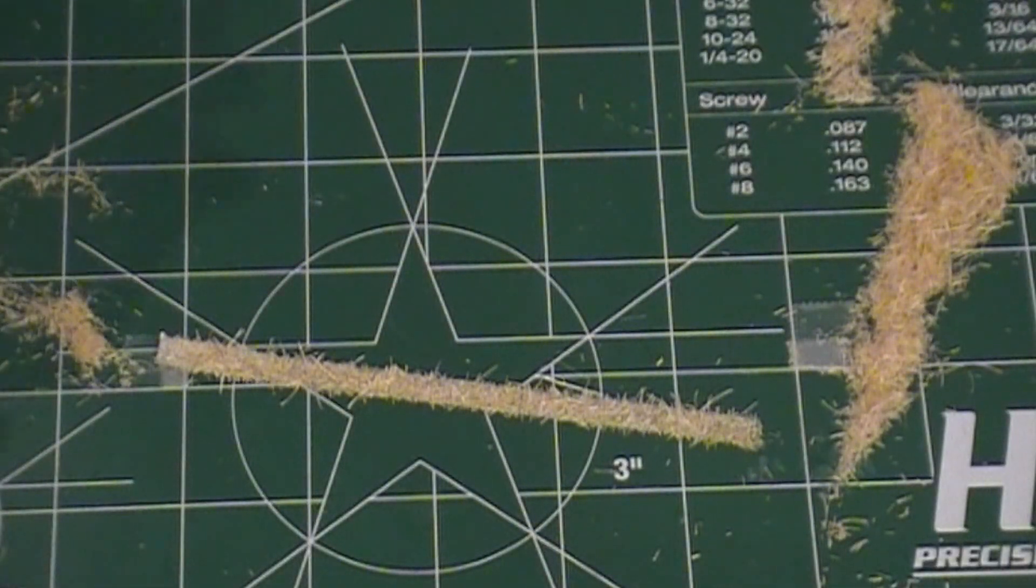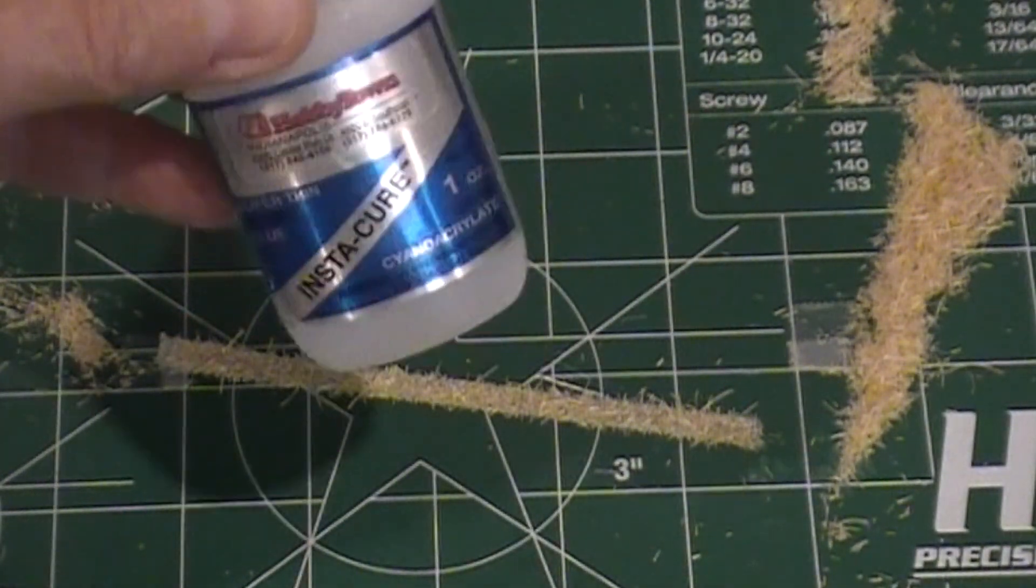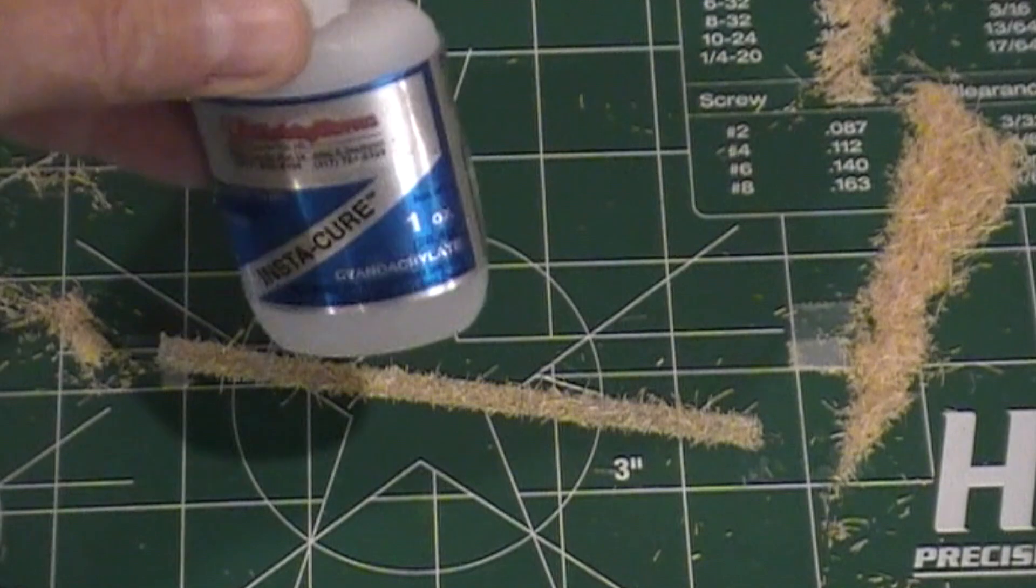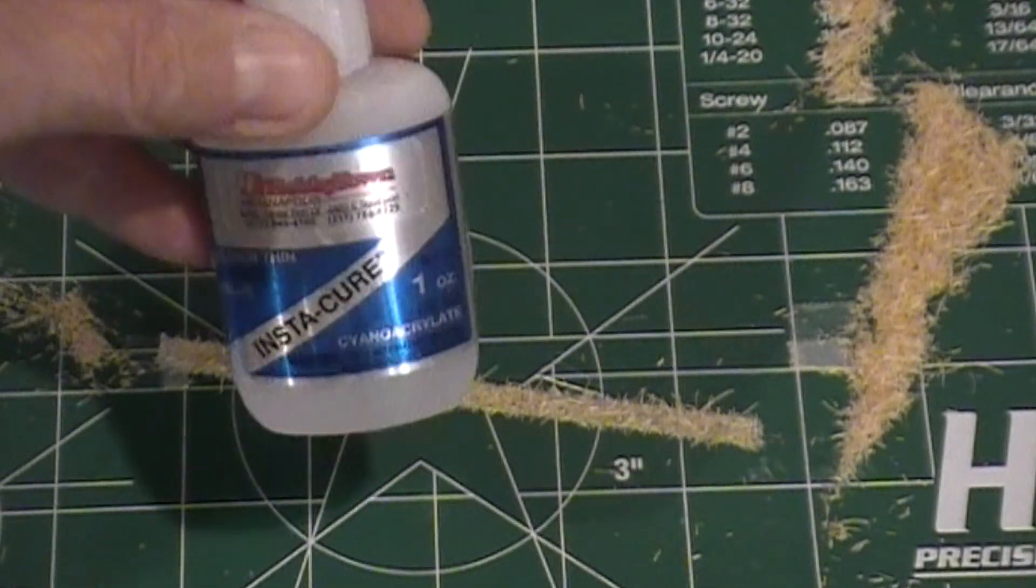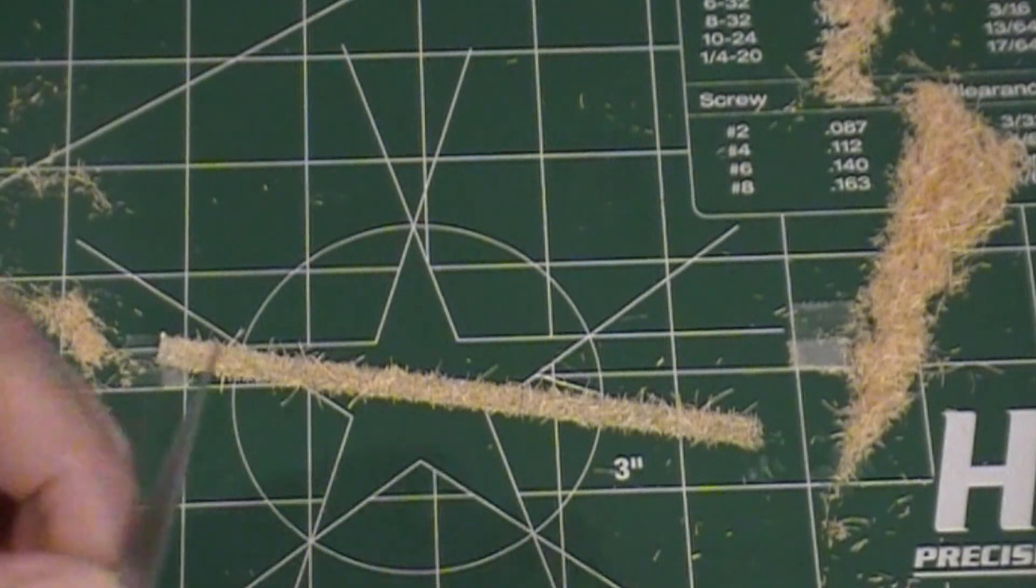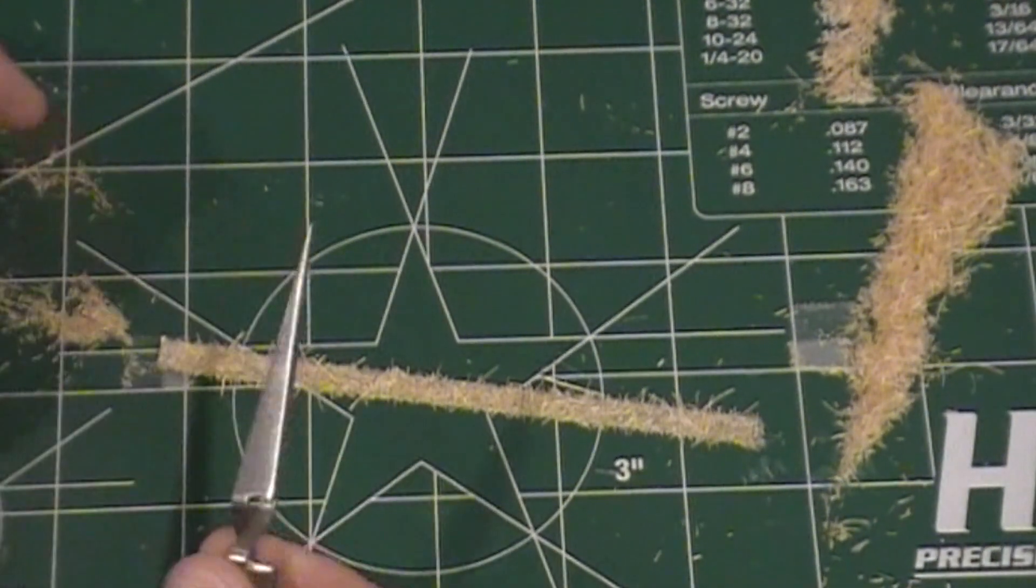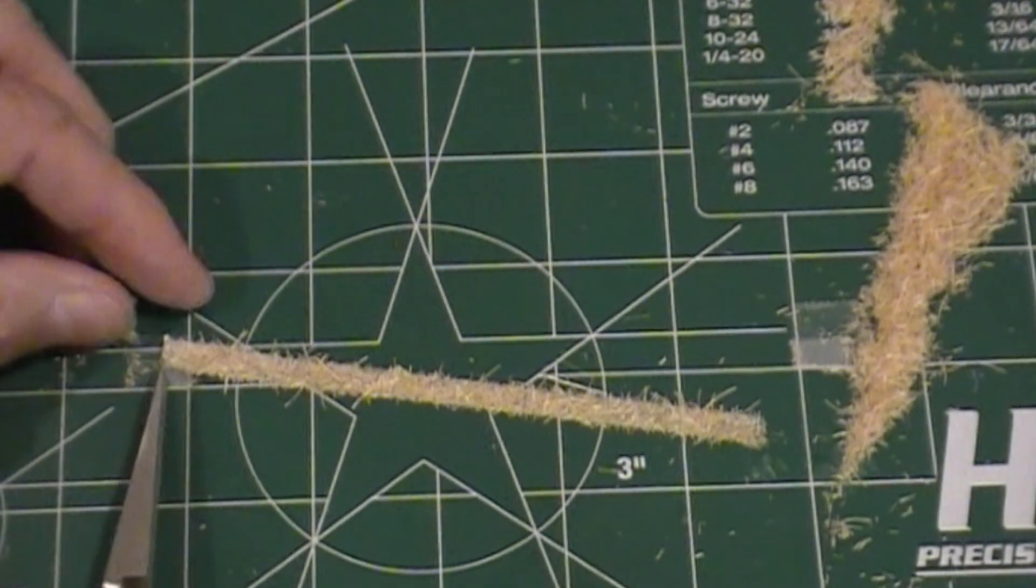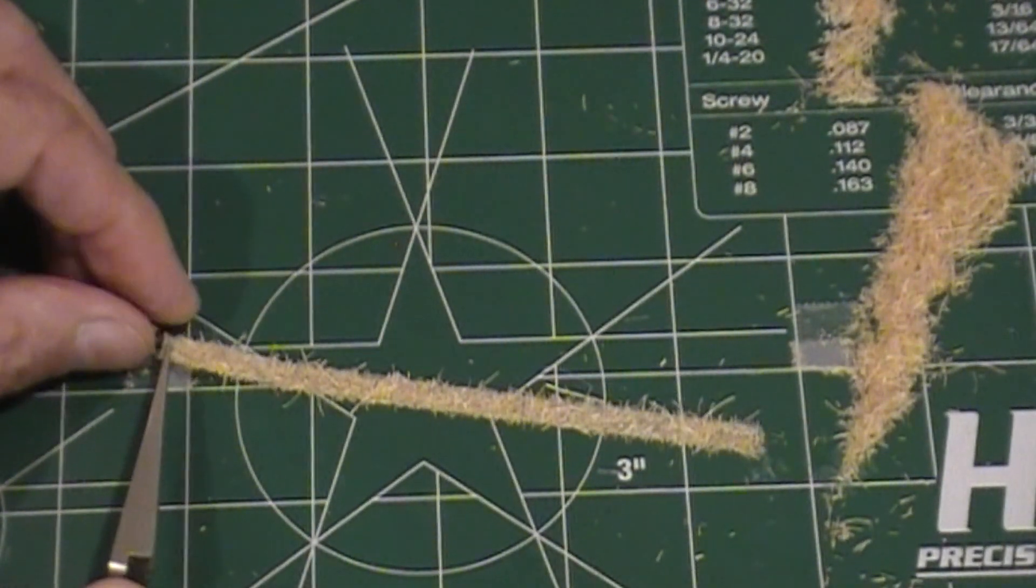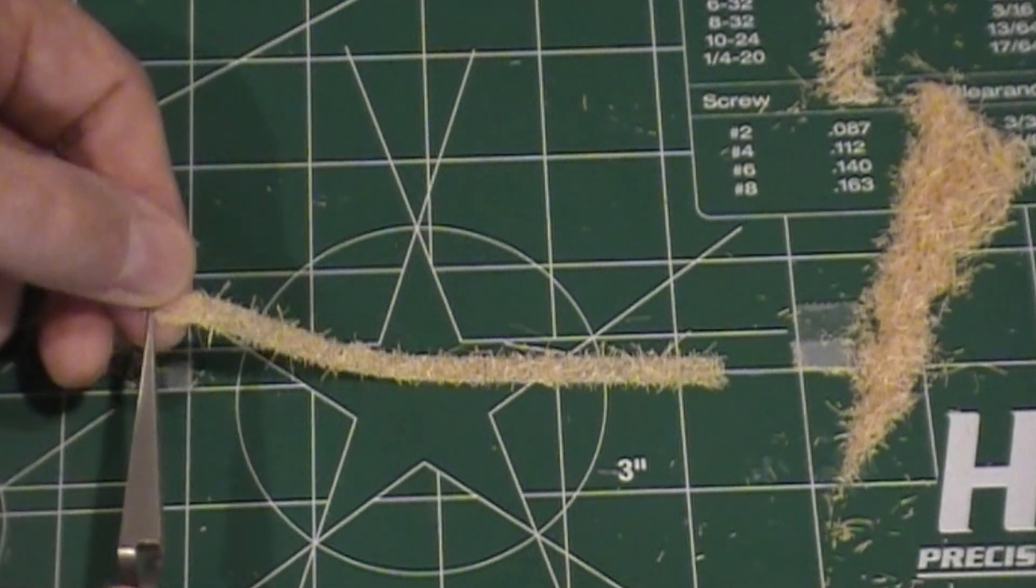Okay, for this next part, get a little quick setting CA glue ready to go, so we can once we get the hay bale rolled up. This is probably about the hardest part of the whole project. I've got a real fine little pair of tweezers here, and we need to start getting that roll. The hardest part is getting it tight.